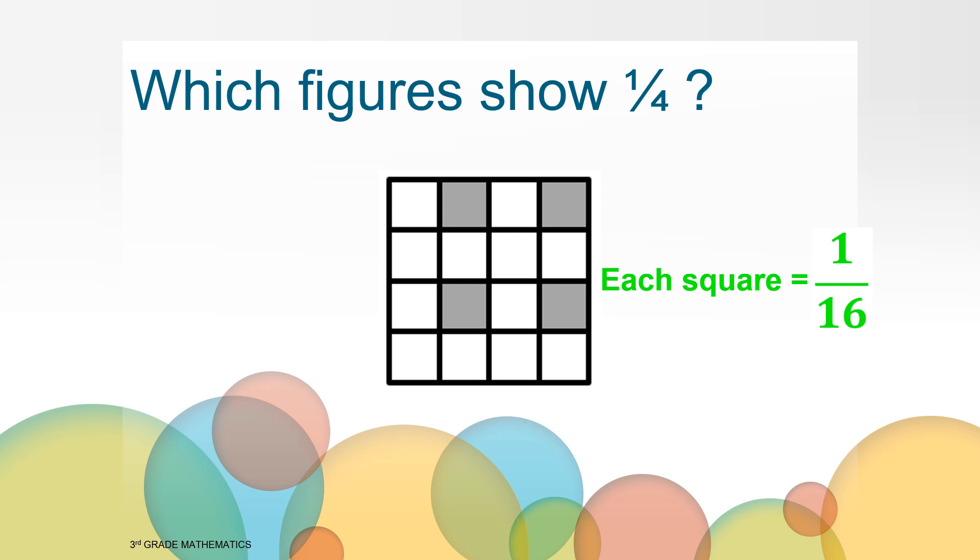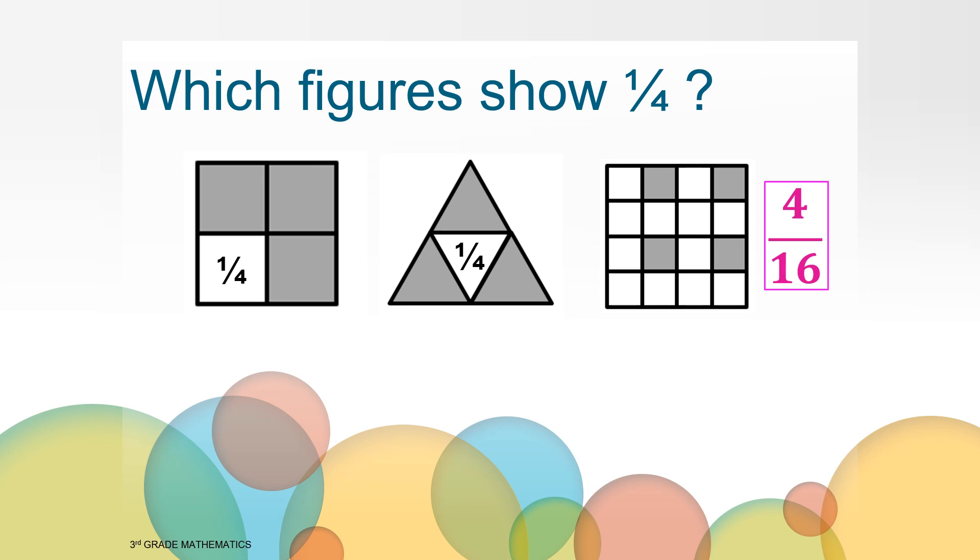We can see that four of the 1/16 squares are shaded, so 4/16ths are shaded. Now we need to think about if we see one fourth in this figure here. Let's compare it to the others that we've seen so far. Earlier we confirmed that the two figures on the left were both split into fourths and showed one fourth not shaded.